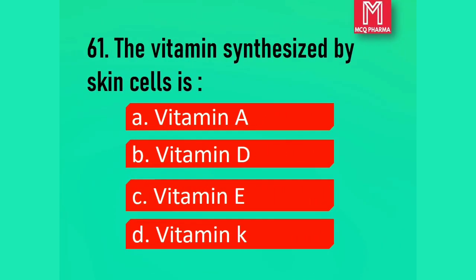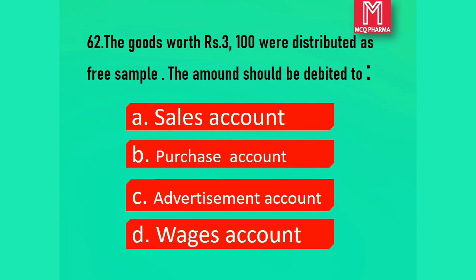Question number 61. The vitamin synthesized by skin cells is: Option A, Vitamin A. Option B, Vitamin D. Option C, Vitamin E. Option D, Vitamin K. Correct answer: Option B, Vitamin D.